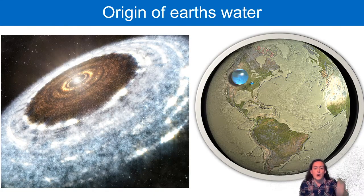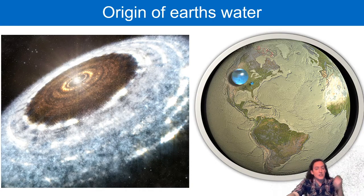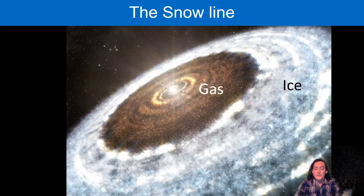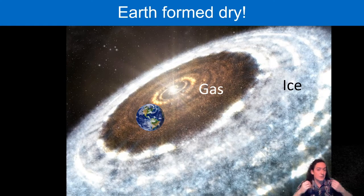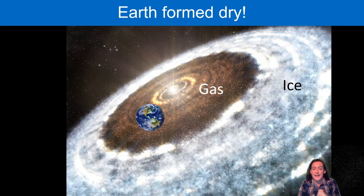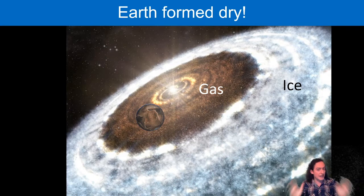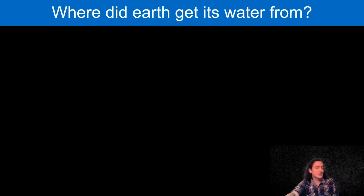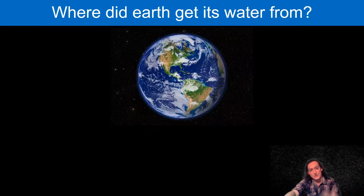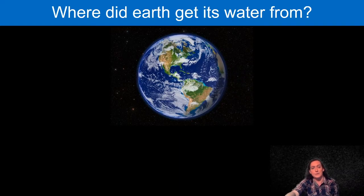This has substantial implications for the origin of water on earth, because earth formed inwith of the snow line. It formed where water is in the gas phase, and so that water should have been lost to the outer solar system as it's blown out by energetic solar winds in the early solar system. So earth should have formed dry, which is completely at odds with the pale blue dot we see today that's really nice and habitable and lovely. So one of the key questions we have in planetary science is where did earth get its water from? How did we get the pale blue dot?